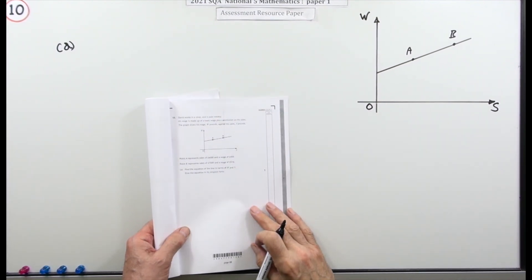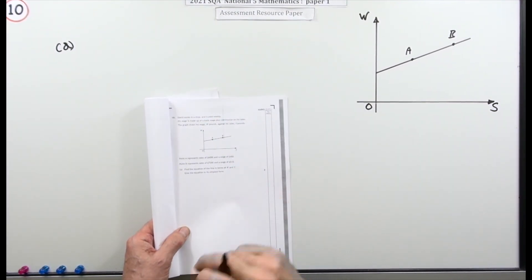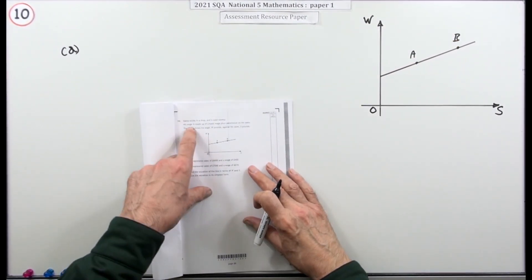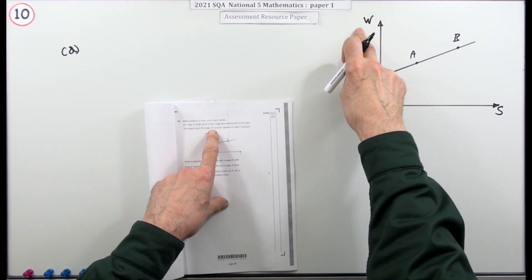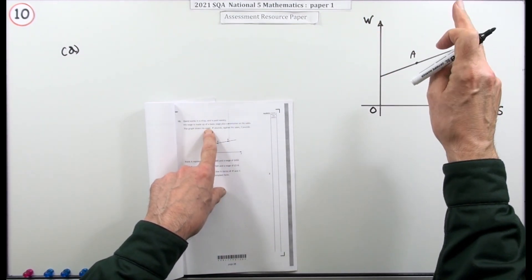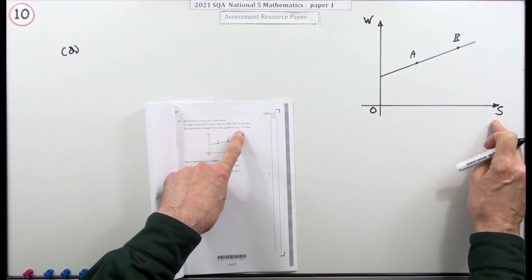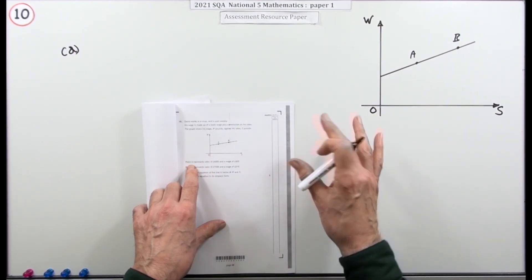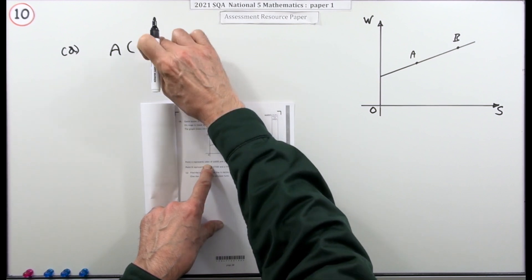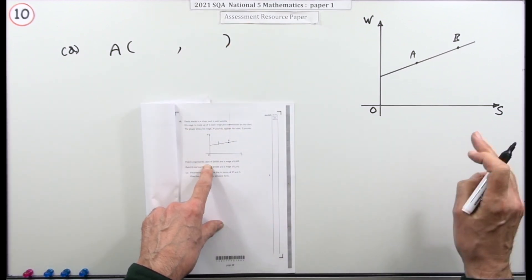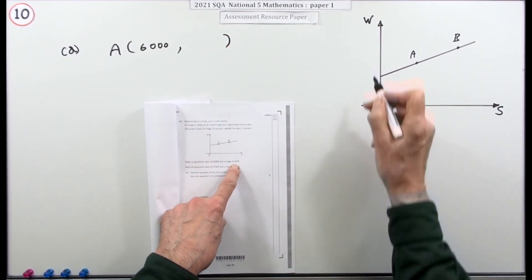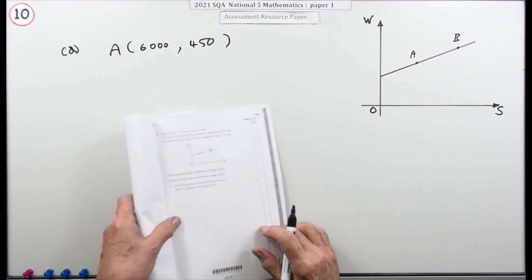Number 10 from paper one of the 2021 National Five resource paper — a four-mark question. There's a graph with a line in it, but notice it's not the normal y and x. W is a wage and S is the amount of sales made, because the wage depends on a basic amount when there are no sales. Point A represents sales, so using the x-y convention: sales is the x, that's 6,000, and the wage is the y, that's 450.